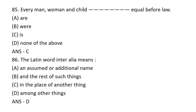Every man, woman and child dash equal before law? Option A: ARE. Option B: WHERE. Option C: IS. Option D: None of the above. Every man, woman and child IS equal before law. Option C is the correct answer.